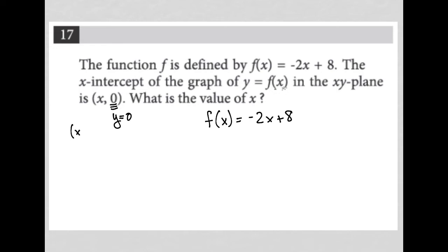Because this comes from the ordered pair, x comma y, and we're saying we don't know what x is in the x-intercept, that's what we're trying to find. But the y-value we do know, because the y-value of the x-intercept is always 0. We're also given a hint here, which says,